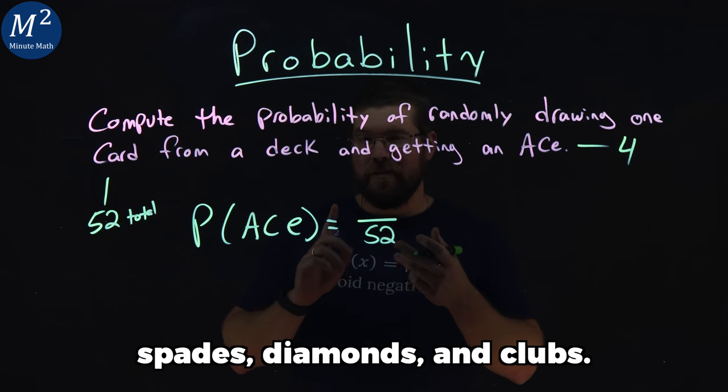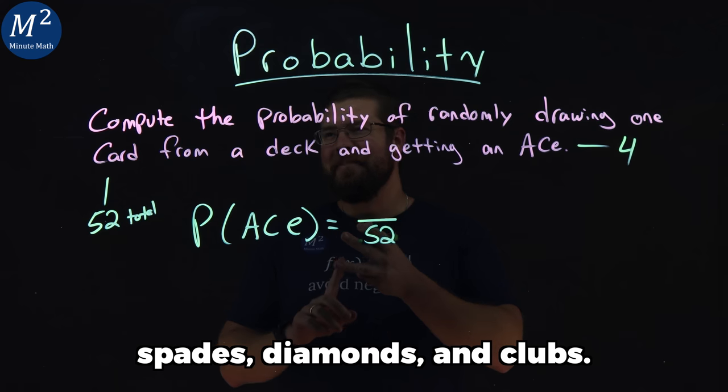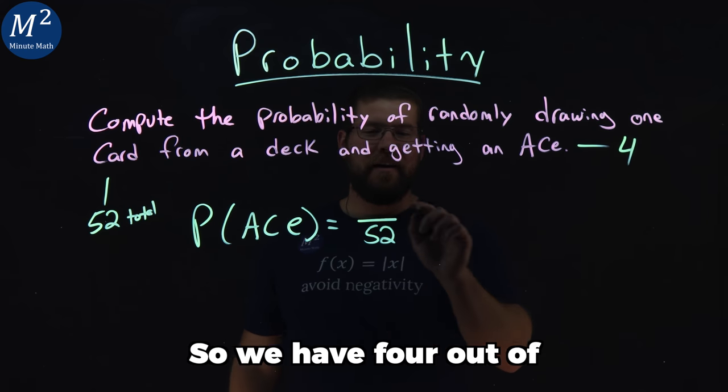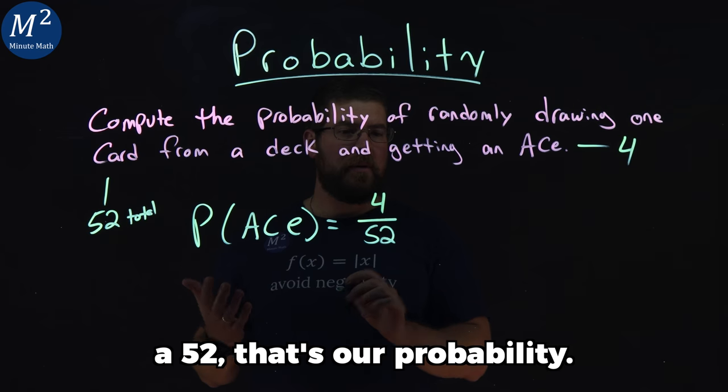Hearts, spades, diamonds, and clubs. So we have four out of 52. That's our probability.